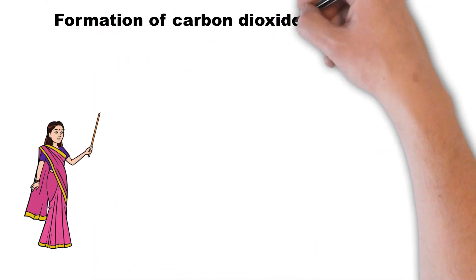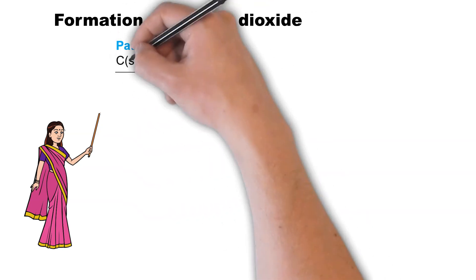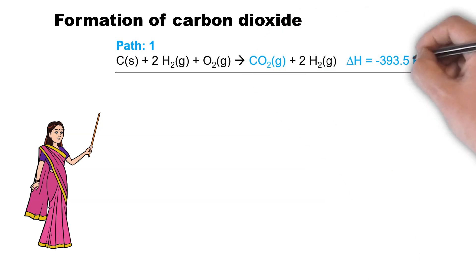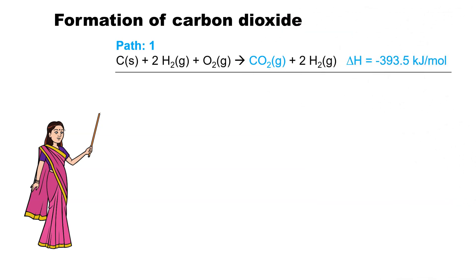Next, let's consider another example: the formation of carbon dioxide. It can be formed in a single step, as indicated by path 1. In this single step reaction, solid carbon reacts with gaseous hydrogen and oxygen to produce gaseous carbon dioxide and water. This reaction is exothermic and releases heat energy of 393.5 kilojoule per mole of carbon dioxide. In other words, the change in enthalpy delta H of this reaction is minus 393.5 kilojoule per mole of carbon dioxide.